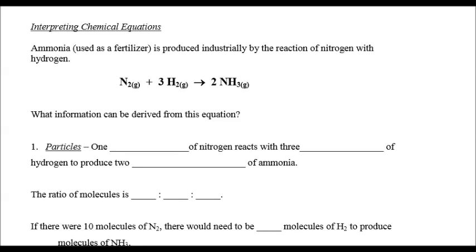So to interpret a chemical equation, we need to understand all those words that we talked about before. An atom, a molecule, an ion, and a formula unit. So what information can be derived from this equation? Well, we can look at the particles. One molecule of nitrogen will react with three molecules of hydrogen to produce two molecules of ammonia. They are molecules, because these are non-metals covalently bonded.